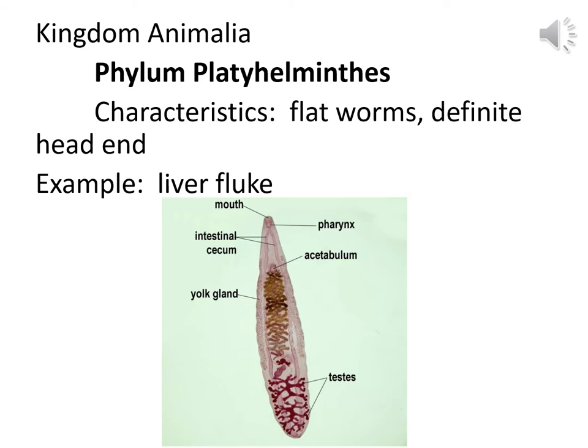Liver flukes are also in Phylum Platyhelminthes — ditto marks on the characteristics — still flatworms with a definite head end. The liver fluke does have a definite head end, though it's hard to tell without the label showing the mouth and testes. Liver flukes can be picked up from eating undercooked shellfish and other fish, and they can get into your liver. As long as you've just got one liver fluke you're probably okay, but if you've got more liver flukes than you do liver, you'll probably have some problems. The good news is there's medicine.